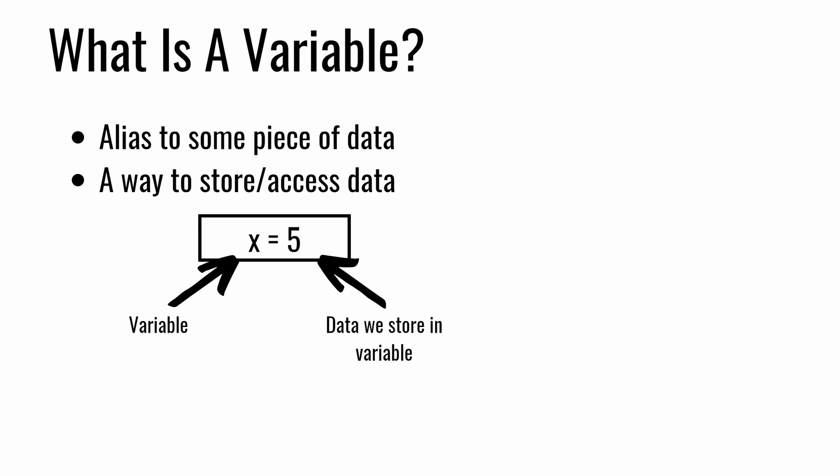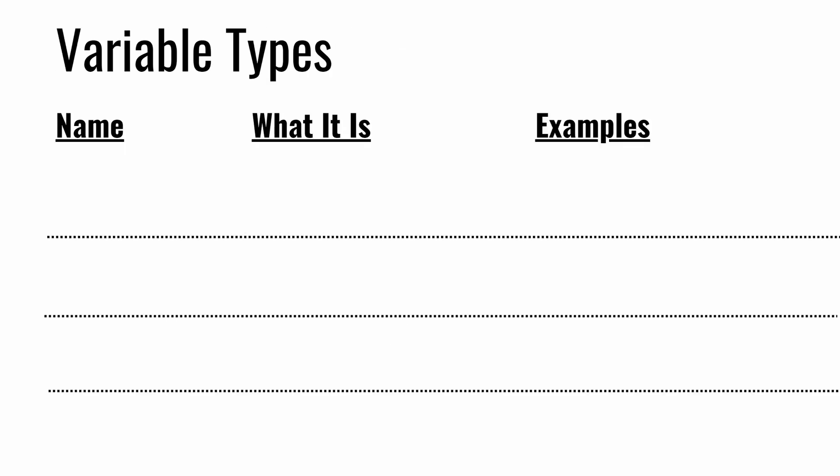What kind of data can we store in variables? Python has quite a few different types of variables, but we're going to focus on four in particular that are the most basic and essential to start off with, and we'll get into more later. We have numbers, which are just numeric values, strings, and booleans. We break numbers into two categories: ints and floats.